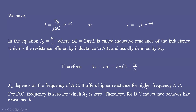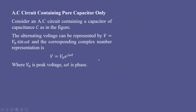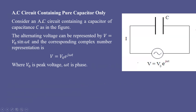The inductive reactance X_L = ωL depends on frequency: it offers higher resistance for higher frequency AC. For DC, frequency is zero, so X_L = 0 — the inductor behaves like a simple resistance and offers no opposition to DC current. But for AC, the inductor offers resistance equal to ωL, where ω is the angular frequency and L is the inductance.